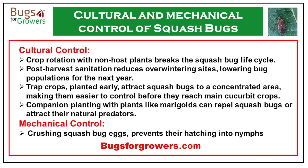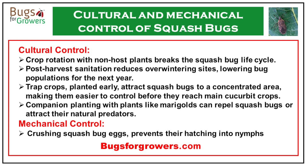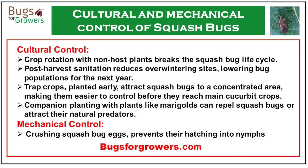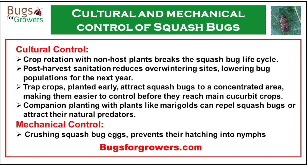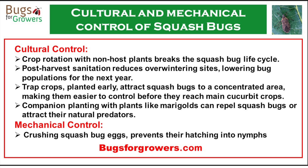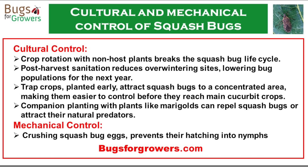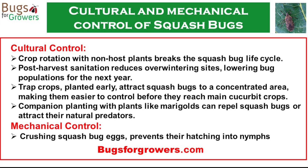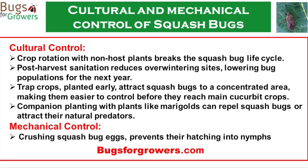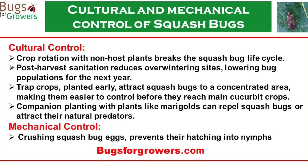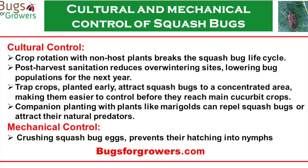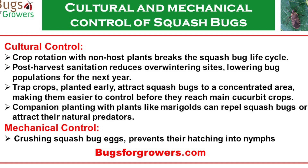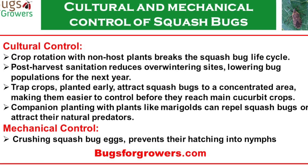Cultural and mechanical control practices are essential for avoiding the use of chemical pesticides against squash bugs in organic gardens. Cultural practices may include rotating crops with non-host plants to break the squash bug life cycle. Post-harvest sanitation will also reduce overwintering sites, lowering squash bug populations for the following year.